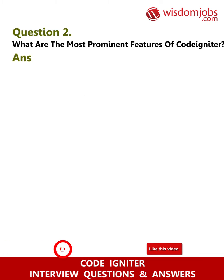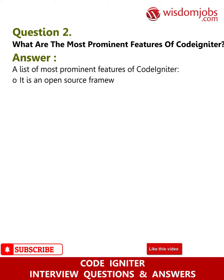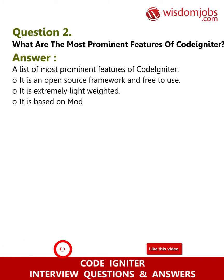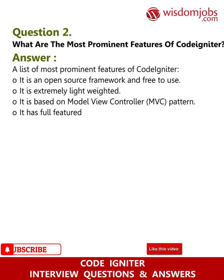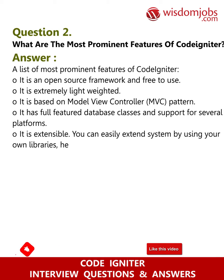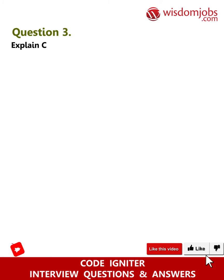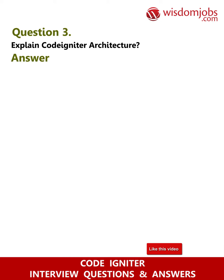Question 2: What are the most prominent features of CodeIgniter? Answer: It is an open source framework and free to use. It is extremely lightweight. It is based on the Model-View-Controller (MVC) pattern. It has full-featured database classes and support for several platforms. It is extensible — you can easily extend the system by using your own libraries, helpers, etc. It also has excellent documentation.